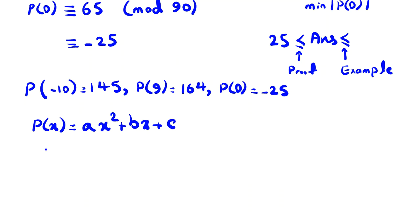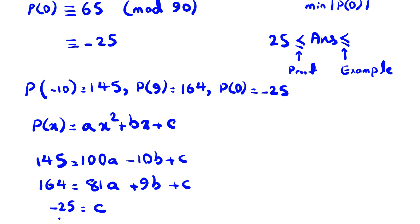So if I replace P(-10), it will be 145. Replace x with -10: 100a - 10b + c. And here, P(9) is 164, which is 81a + 9b + c. And for 0, if you place here, it will be -25, which is 0 + 0 + c. So c is -25.